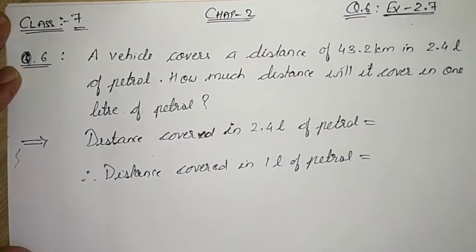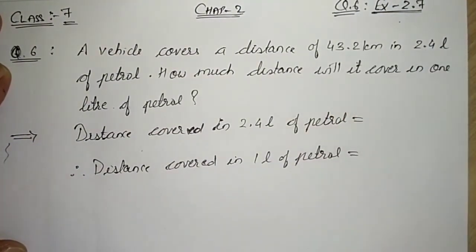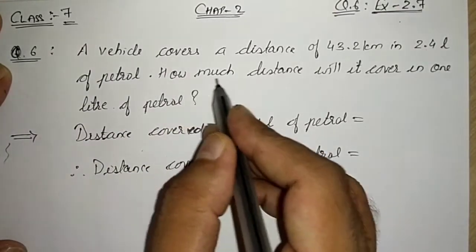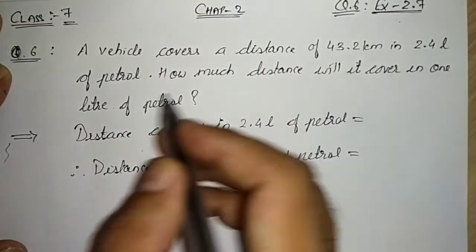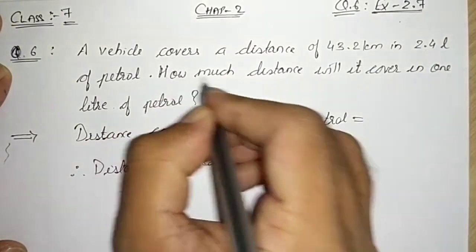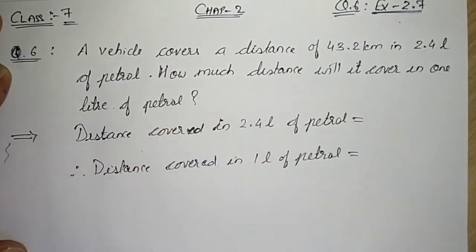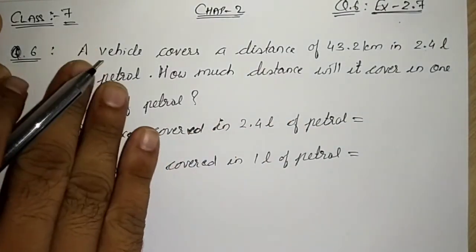There is one vehicle which covers 43.2 kilometers in 2.4 liters of petrol. How much distance will it cover in one liter of petrol? Now they are asking us how much distance will the vehicle cover in one liter of petrol.